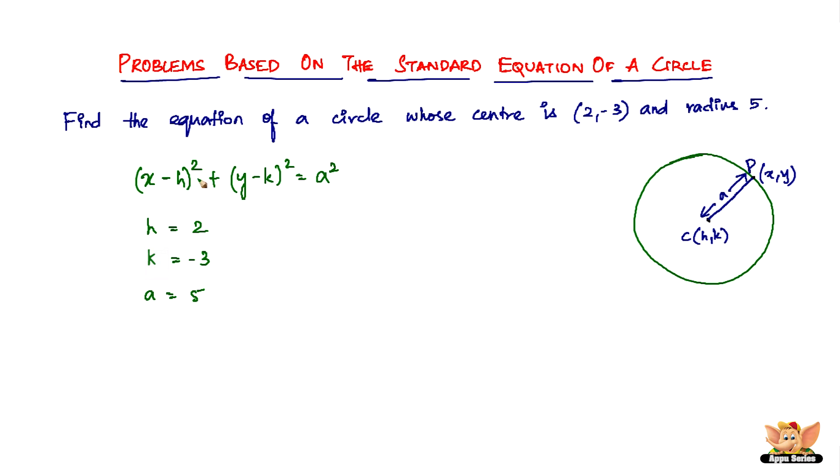So here we are now substituting it. So we have x minus h is 2, so (x - 2)² plus y minus k, and k is already -3, so minus of -3 is going to be +3. So (y + 3)² equals a². a is 5, so 5².